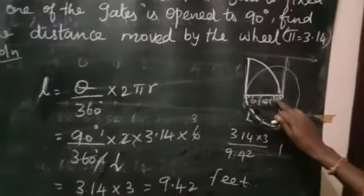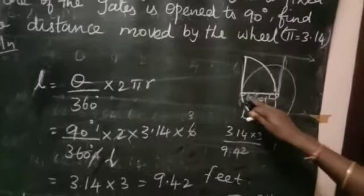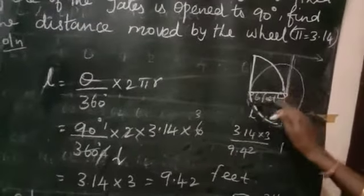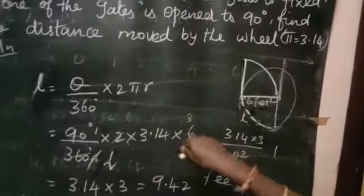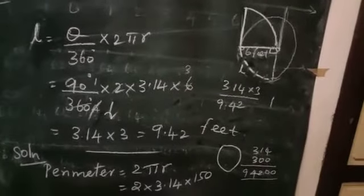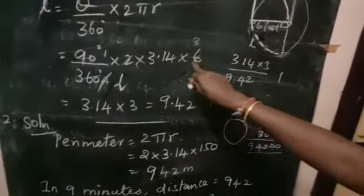The distance is 6 feet. This is the radius of this arc. So 6 is the radius of the arc. Now we cancel 90 degrees and 360.